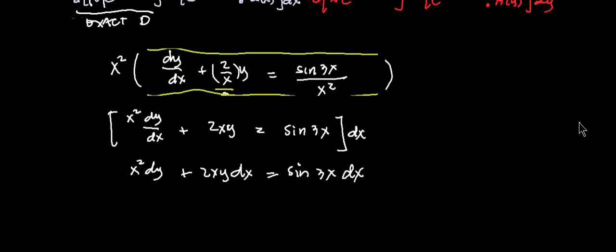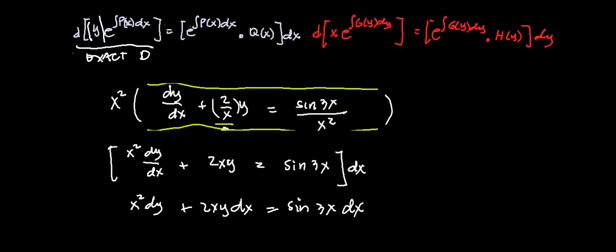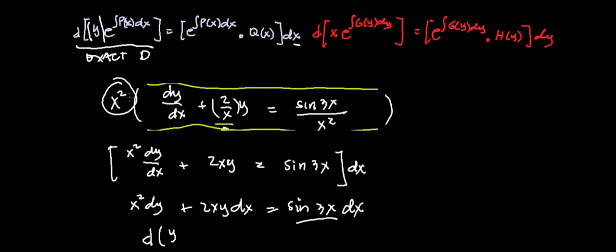So we have x squared dy plus 2xy dx equals sine 3x dx. As you can see, the left side is the integrating factor times q(x) with dx, while the right side can be written as the exact derivative of y times the integrating factor x squared.